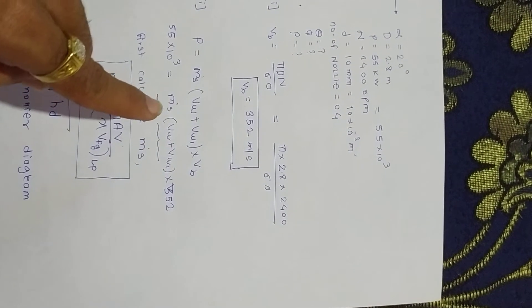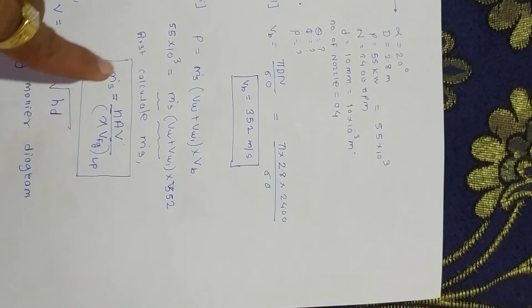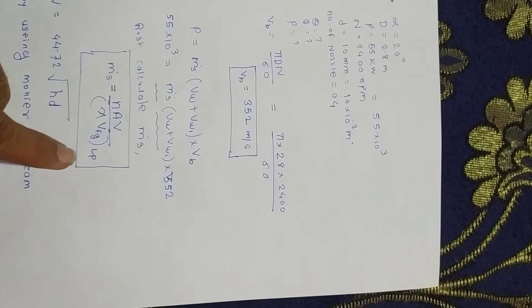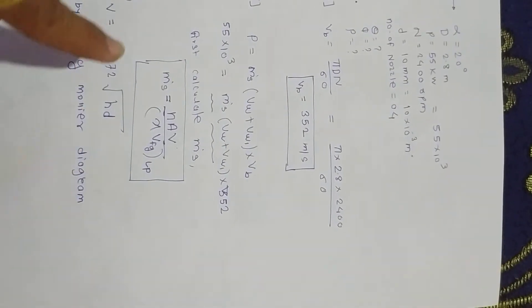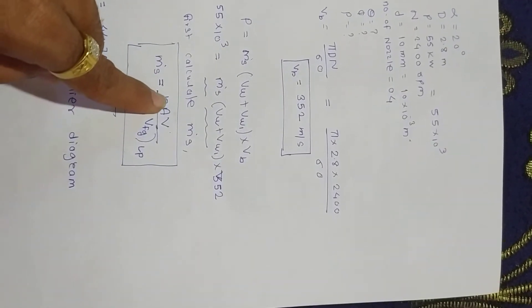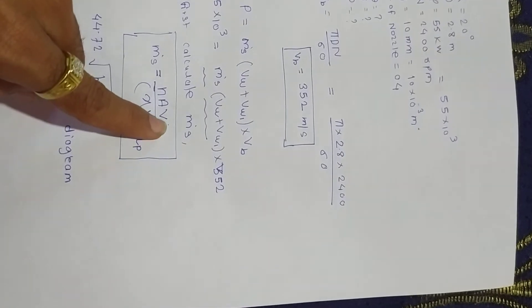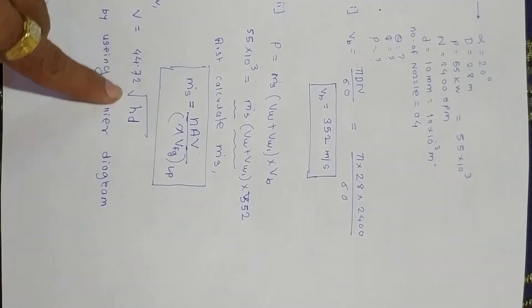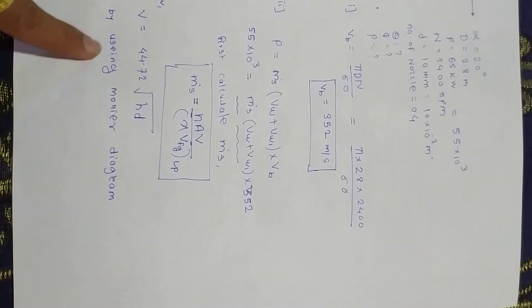First we calculate mass of steam. For calculating mass of steam, we know the formula: N A V divided by X times VFG at low pressure. For calculating mass of steam, first we find the parameters. First parameter is V.